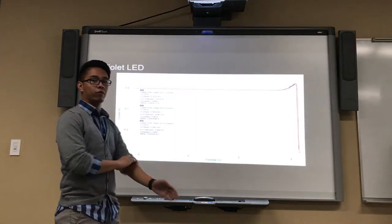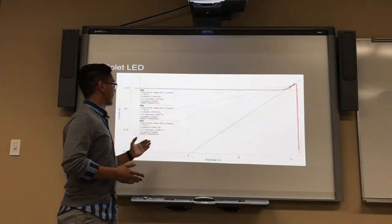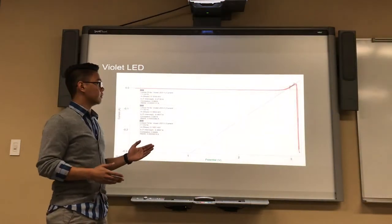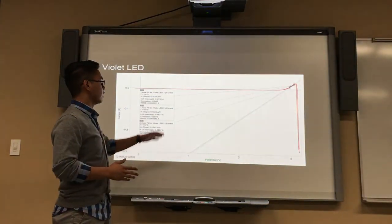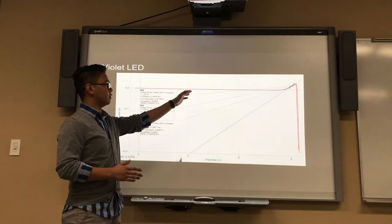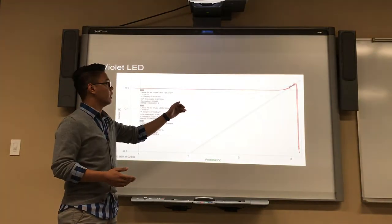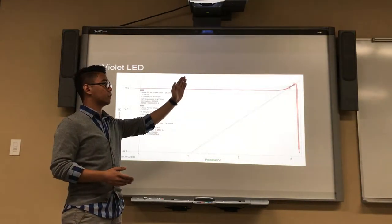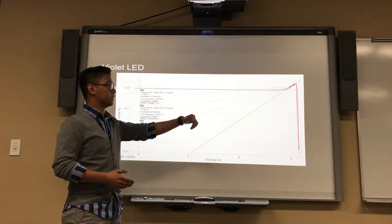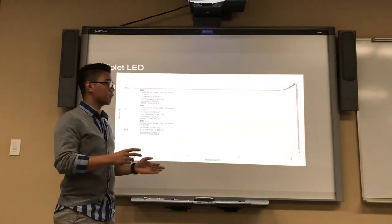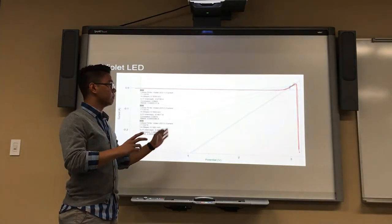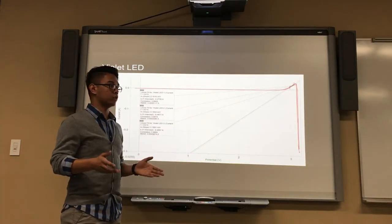So this is an example of one of the LEDs that we use, specifically the violet LED. As you can see there's a trend along which all of our LEDs actually followed where as the voltage increased the current steadily stayed at zero until a certain point where there was a sudden increase exponentially and then it dropped down. There was a certain point where we had the linear fit within these trials to find the voltage threshold.